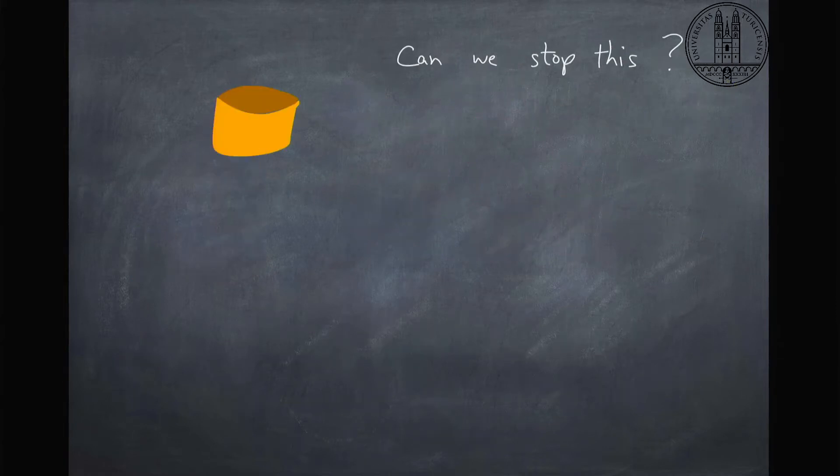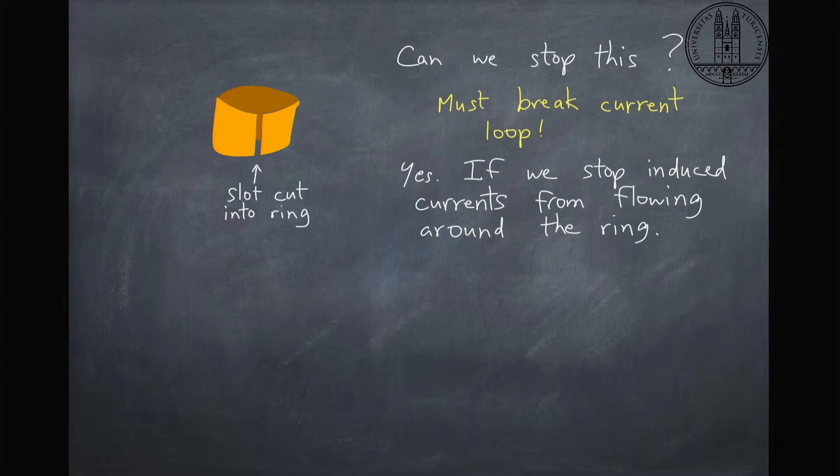So could we actually stop this? This is kind of a second experiment. Could we stop this ring from jumping? And of course we have these currents that are causing this to be a magnetic field. But what we could do is cut a slot into this ring here and therefore the currents can't flow and therefore this can't turn into a magnet.